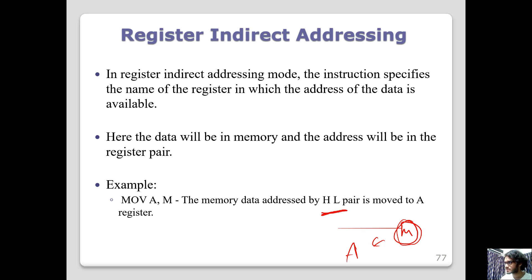In register indirect addressing, the HL register pair is used. The address is held in a register pair, so the data is accessed indirectly through the register.